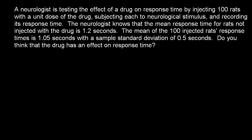A neurologist is testing the effect of a drug on response time by injecting 100 rats with a unit dose of the drug, subjecting each to neurological stimulus, and recording its response time. The neurologist knows that the mean response time for rats not injected with the drug is 1.2 seconds. The mean of the 100 injected rats' response times is 1.05 seconds, with a sample standard deviation of 0.5 seconds.